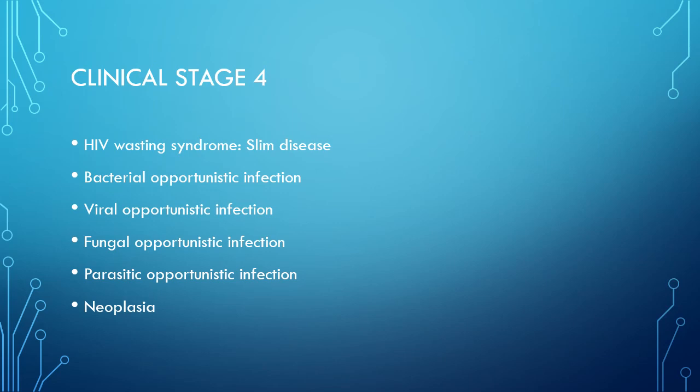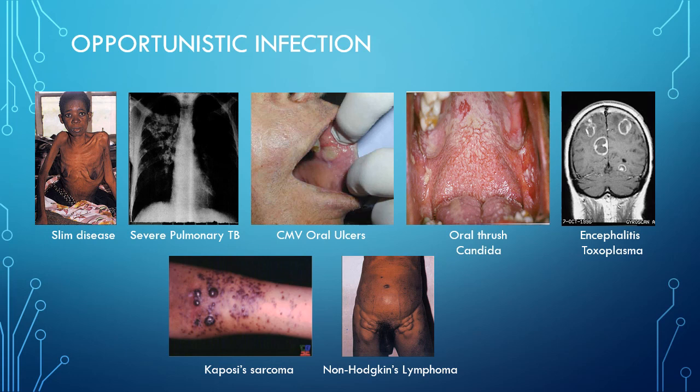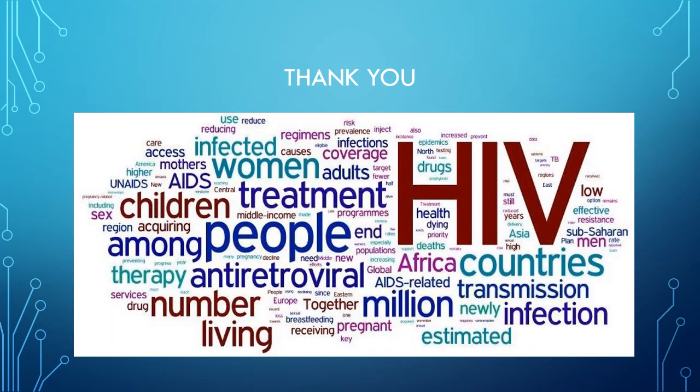This picture shows some common opportunistic infections: slim disease with heavy weight loss, severe pulmonary TB (bacterial infection), CMV — cytomegalovirus (viral infection), oral thrush, cytomegaloviral oral ulcers, oral thrush due to Candida, encephalitis due to Toxoplasma, Kaposi's sarcoma, and non-Hodgkin's lymphoma. This covers all of Part One, where we discussed introduction, morphology, pathogenesis, and clinical stages of HIV. Lab diagnosis and other parts will be discussed in Part Two. Thank you.